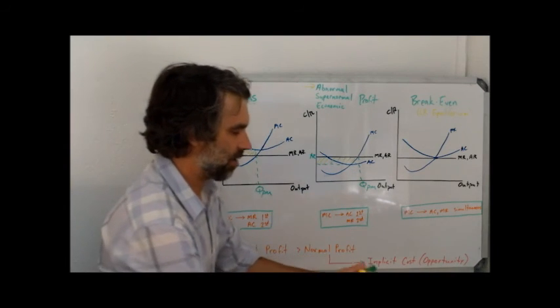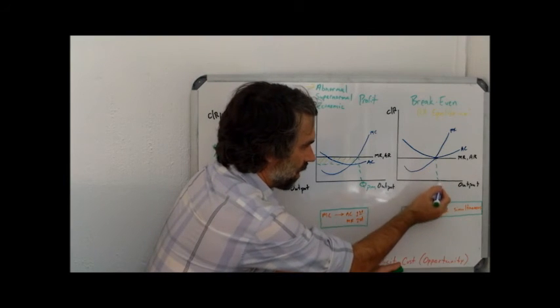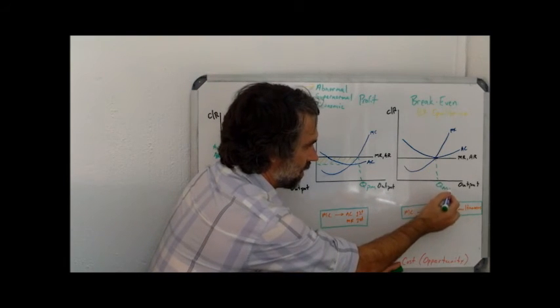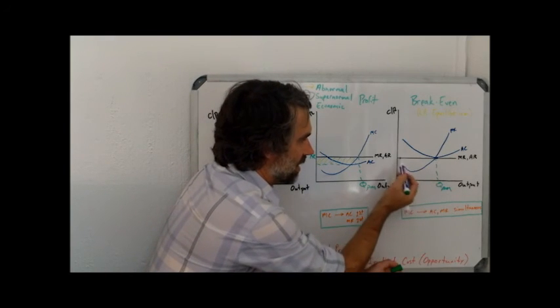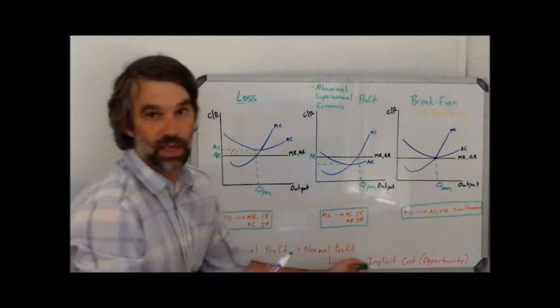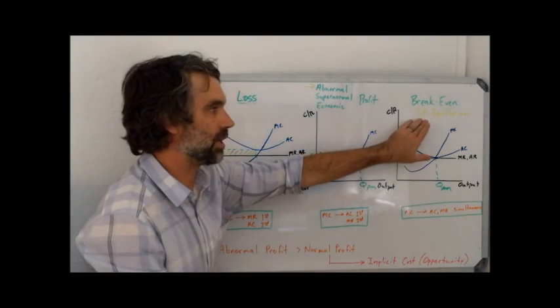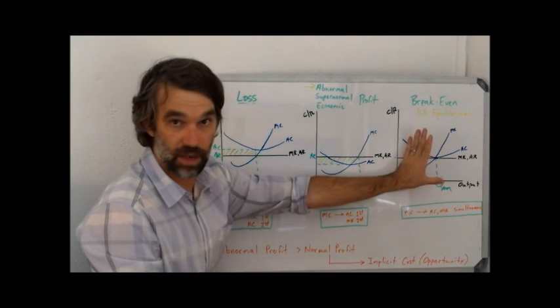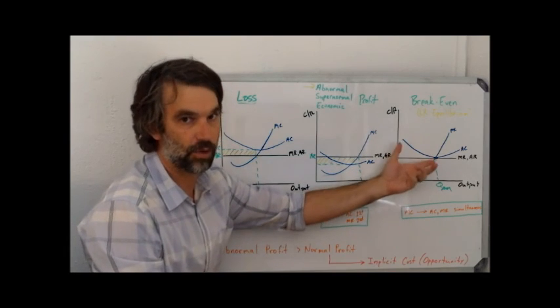In our final diagram here, again, we look for MC MR first. This is our quantity of profit maximization. And when we go look for AR and AC, we see they occur at the same place. So this is what we call break even. And later on in a future video, we'll talk about long run equilibrium, and it's this picture here that in perfect competition will always be established in the long run.